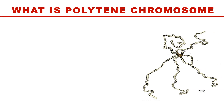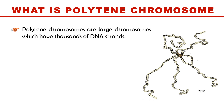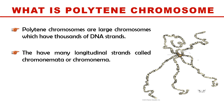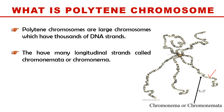So what is a polytene chromosome? Polytene chromosomes are large chromosomes that generally have thousands of DNA strands, and these chromosomes have longitudinal strands which are called chromonimata or chromonima. Polytene means many strands, so this chromosome has many strands and that's why it is called a polytene chromosome.